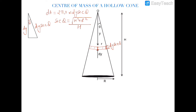The value of small r will be calculated by similarity of triangles. From the large triangle, H/R = y/r, so small r = yR/h.